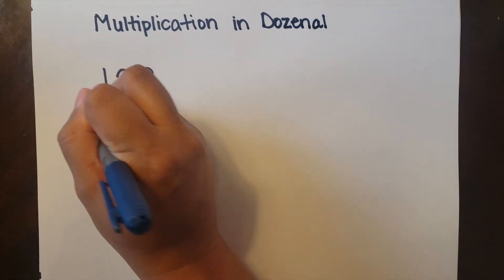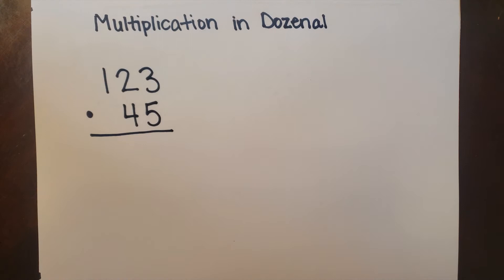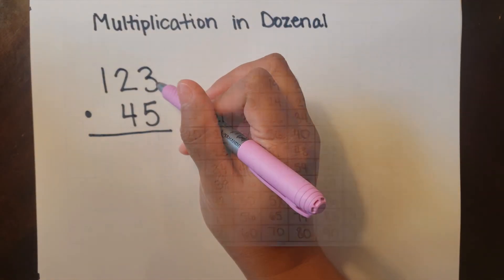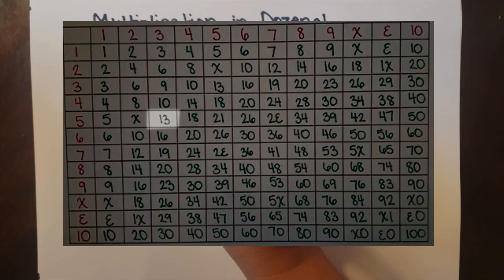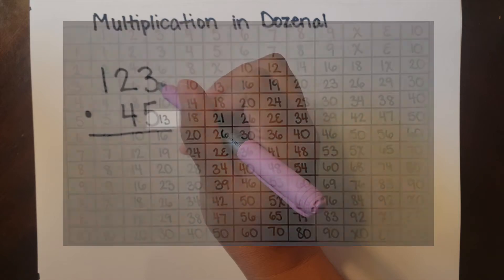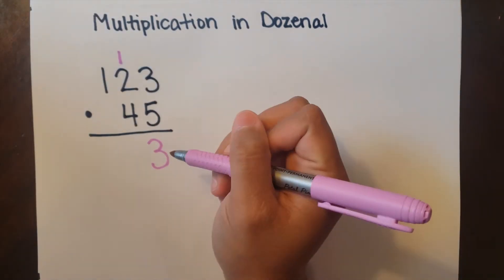We're going to multiply 1 grow 2 doe 3 by 4 doe 5. We start out like normal: 5 times 3. But instead of equaling 15, we need to look at our dozenal multiplication table, and we see that 5 times 3 is 1 doe 3. So we bring down the 3 and carry the 1 up top.